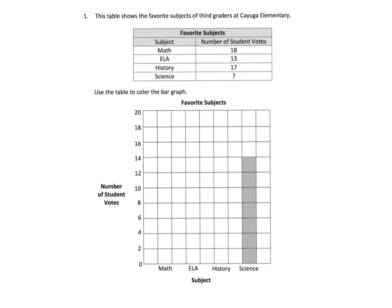Here we have a table full of data showing the favorite subjects of third graders at Cayuga Elementary. Math wins — so enough said, let's move on. We're now supposed to use the table to color the bar graph. The first thing I want students to notice is the title: 'Favorite Subjects.' The title of the table and the title of the graph match because we're talking about the same thing.